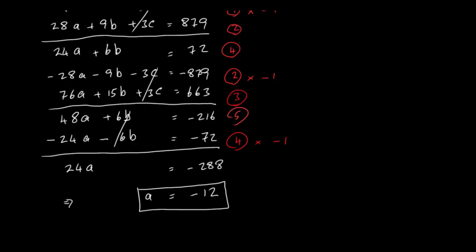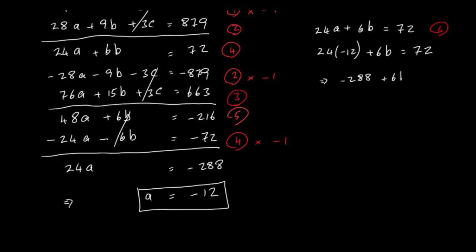I can take either equation 4 or 5 and substitute a to find b. Using equation 4: 24a plus 6b equals 72. Substituting a equals minus 12: 24 times minus 12 plus 6b equals 72. That gives minus 288 plus 6b equals 72. So 6b equals 360, which means b equals 60.